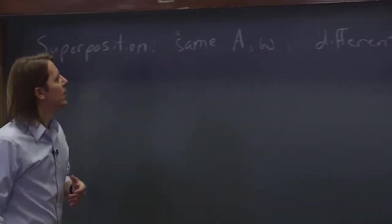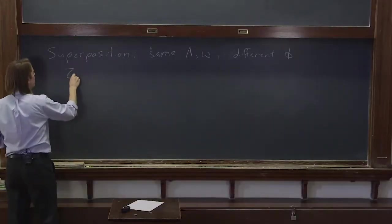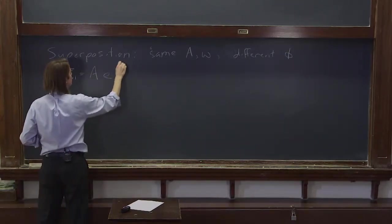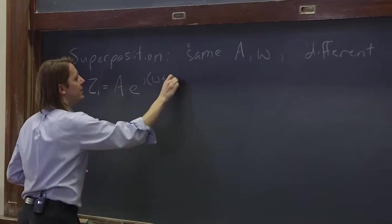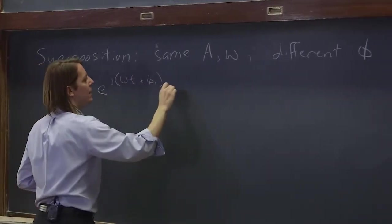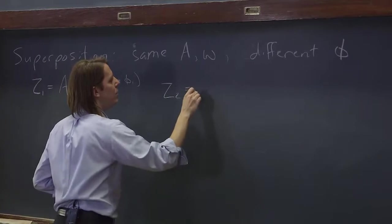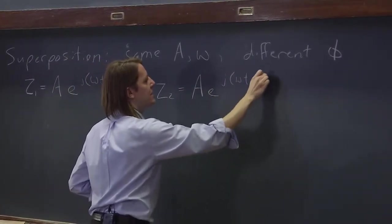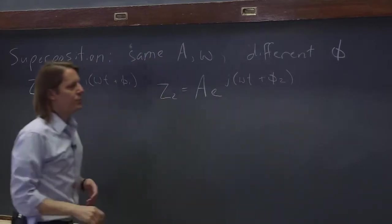So in that case, z1 would be Ae^(jωt+φ1), and z2 would be Ae^(jωt+φ2).